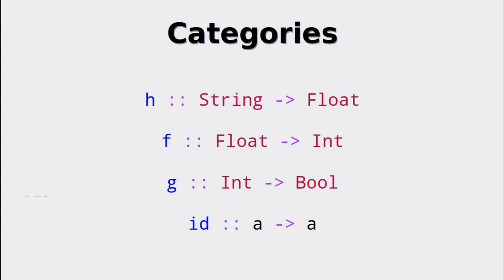Another very important example is the type system of Haskell. As we can see in this example, we could create a new function by composing h, f and g, which would have the type string to bool. Indeed, we also have an identity morphism which is the identity function. Its type is obviously A to A, and thus it preserves the type.